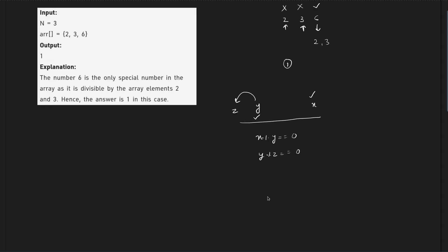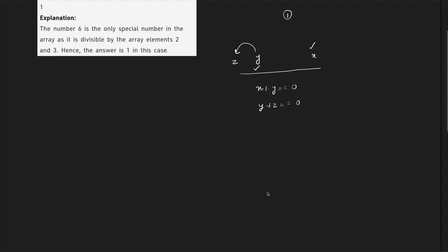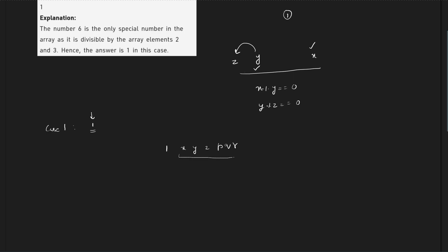To solve this particular question, first I considered a base case: case 1 is when the smallest element is 1. What happens when we have 1 present in our array — if 1 is present then no matter how many elements there are, 1 will divide all of them. So the answer would be at least n minus 1.